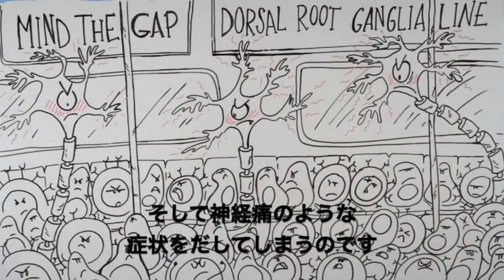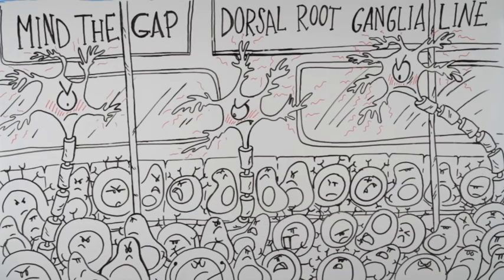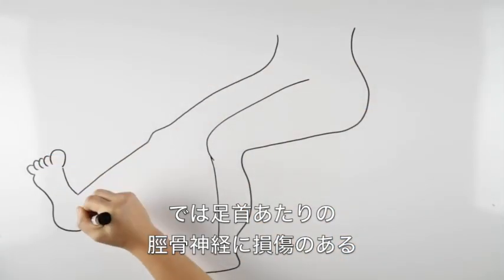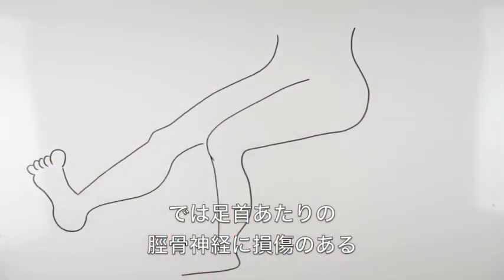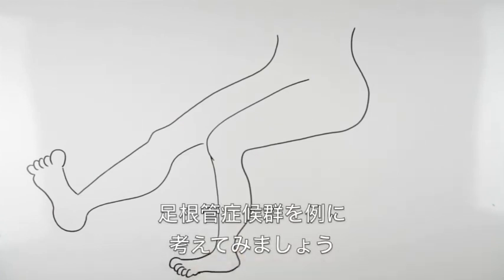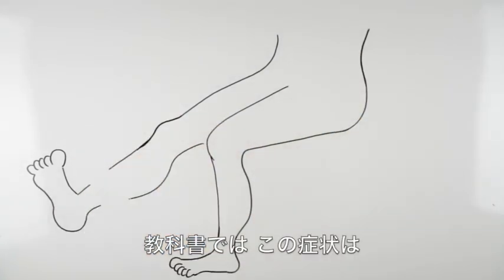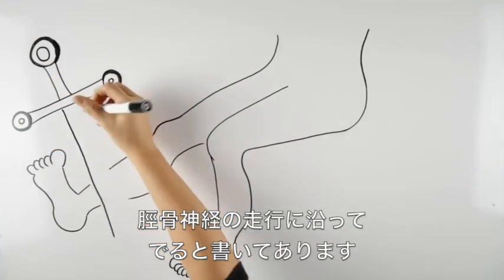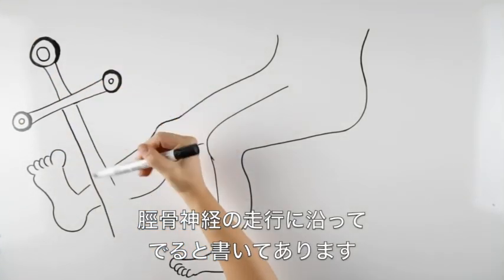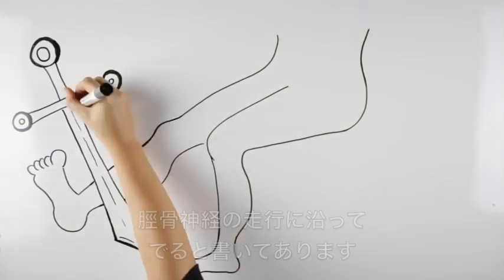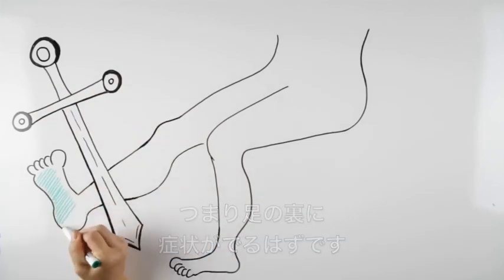This can lead to neuropathic pain behavior. So let's take the example of a patient with tarsal tunnel syndrome, which affects the tibial nerve at the ankle. As per textbook, this syndrome should lead to symptoms in the tibial nerve territory of the foot, which means at the plantar sole.